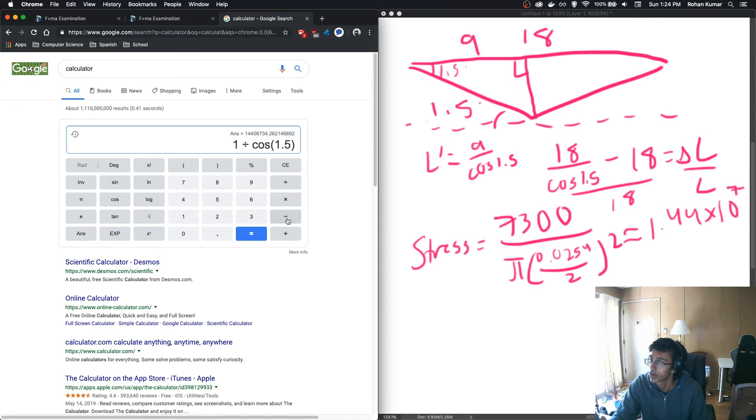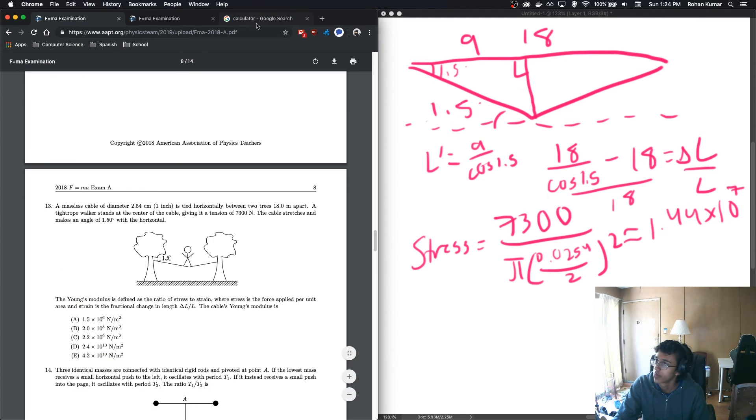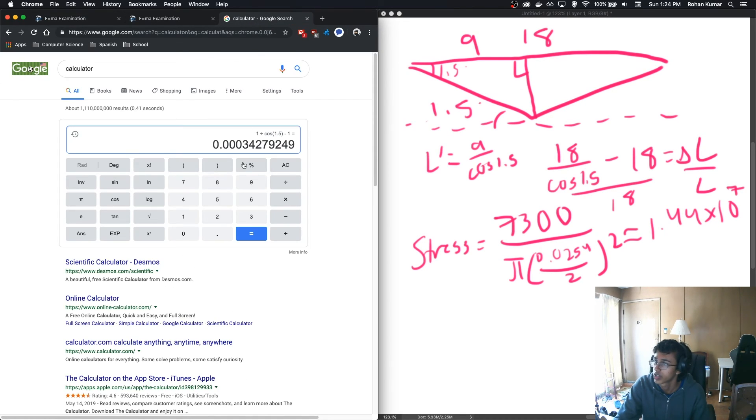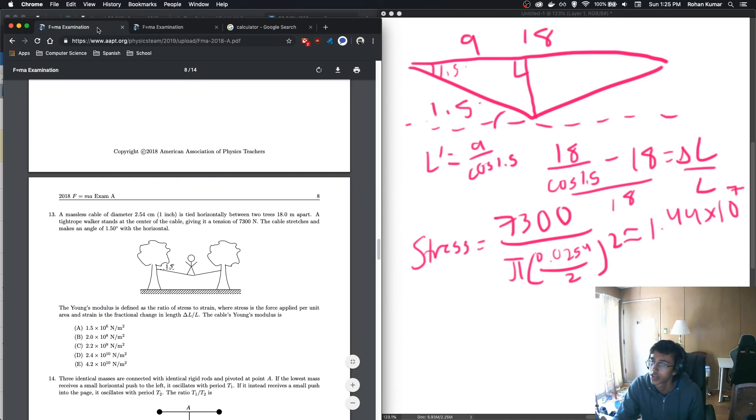Not in the parentheses. Minus 1. So now we have to find our ratio of stress to strain. So we basically do stress over strain, which is 1.44 times 10 to the 7 divided by our answer, which is equal to 4.2 times 10 to the... I don't want to count. 1, 2, 3, 4, 5, 6, 7, 8, 9, 10. Is that an answer choice?